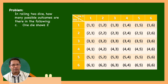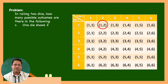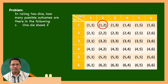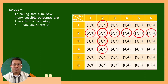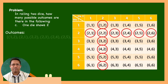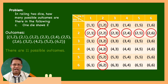Then what about C: One die shows 2. Identify the pairs with 2. The outcomes are (1,2), (2,1), (2,2), (2,3), (2,4), (2,5), (2,6), (3,2), (4,2), (5,2), (6,2). There are 11 possible outcomes.